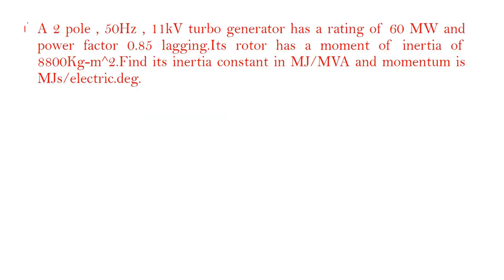Problem number 1. A 2 pole 50 Hz 11 kV turbo generator has a rating of 60 MW and power factor of 0.85 lagging. Its rotor has a moment of inertia of 8800 kg m². Find its inertia constant in MJ per MVA and the momentum is MJ per electrical degree.